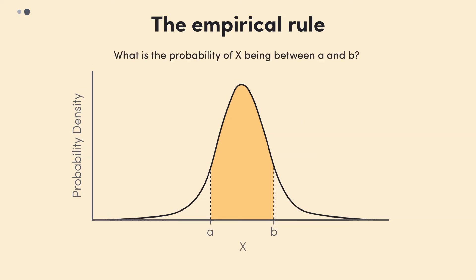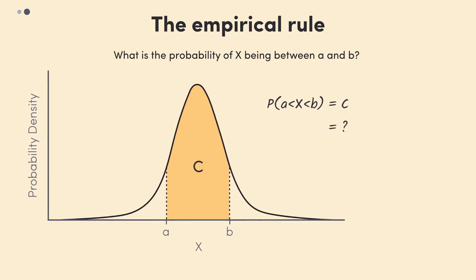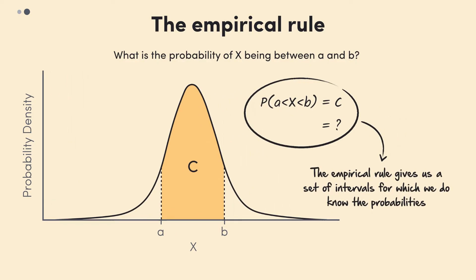For example, the probability of x being between a and b on this normal distribution is shown by the shaded area c here. We could write this as so. In order to actually calculate the probabilities associated with particular intervals like this, we often need technology or a table of values. But what the empirical rule gives us is a set of intervals for which we do know the probabilities and that we should learn off by heart.